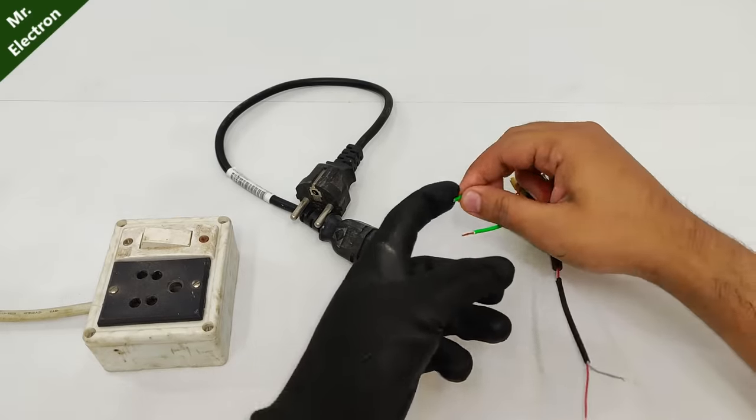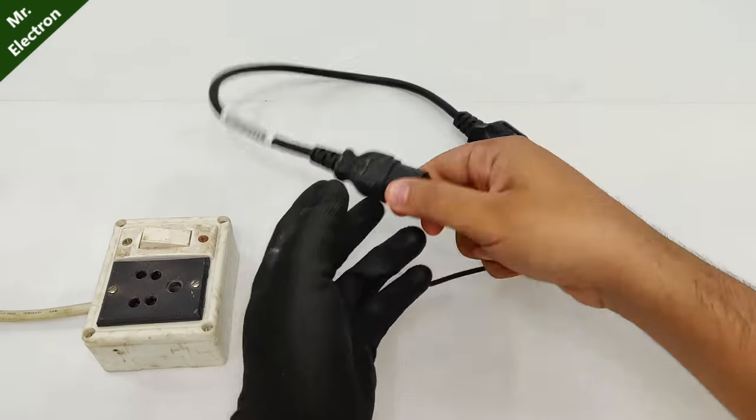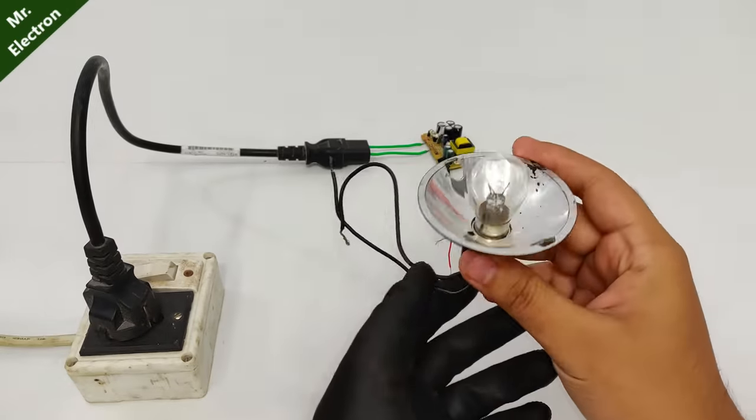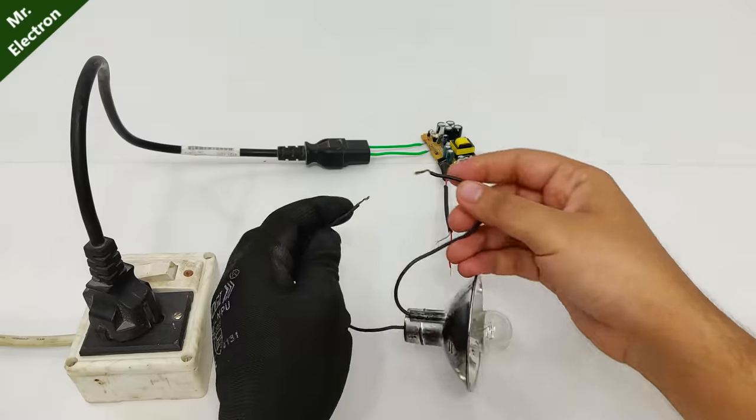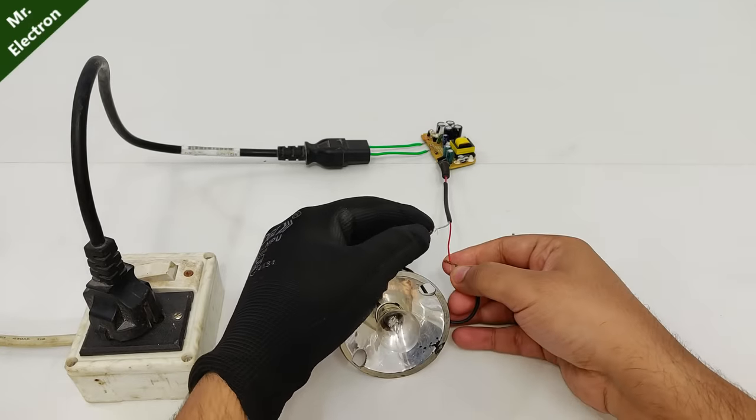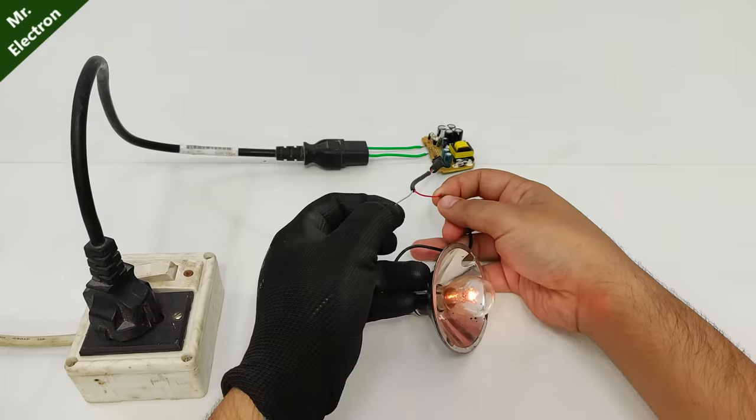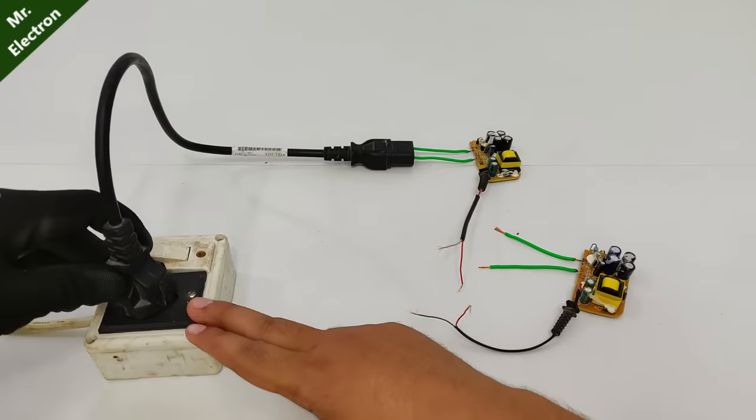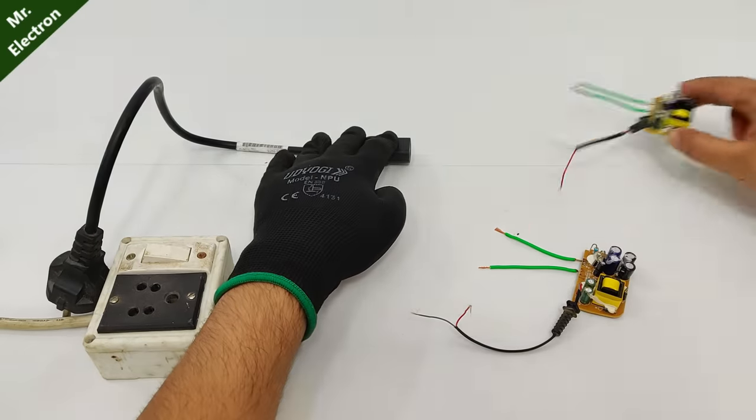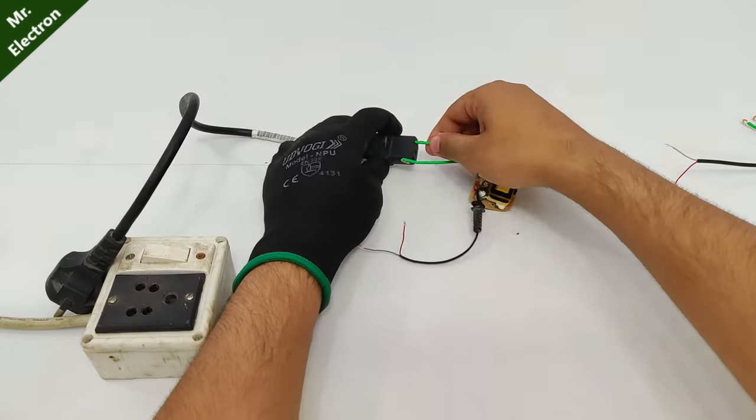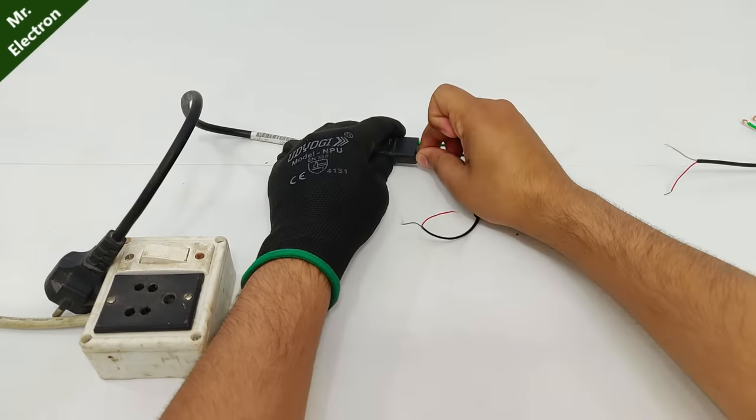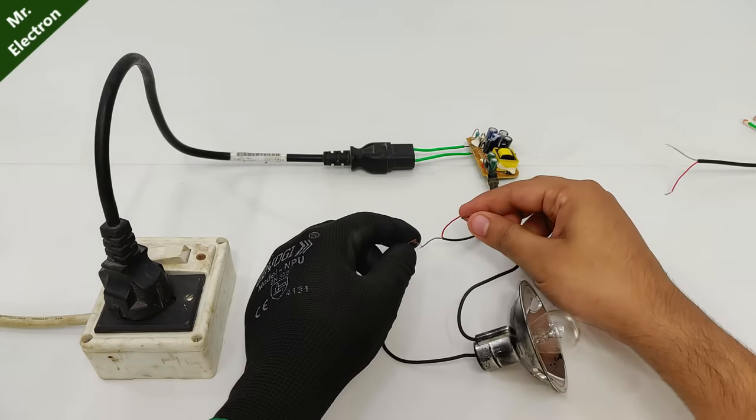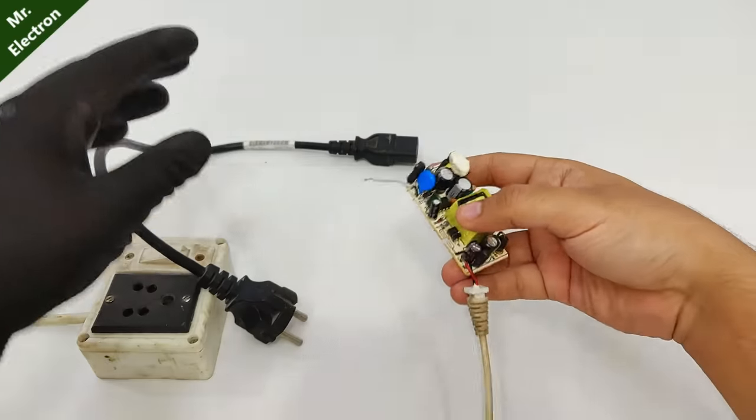So guys, here as you can see that I'm connecting the mobile charger circuit to my 220 volts home socket power supply. Now let's test it with an incandescent bulb. Although the voltage is not 12 volts from the mobile charger, it is glowing a little dim but yes it is glowing, so this one is fine. Now let's test this one. Working, working.